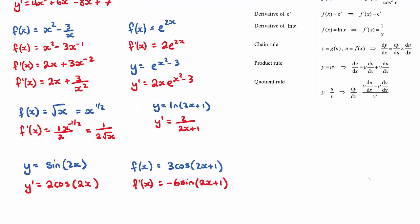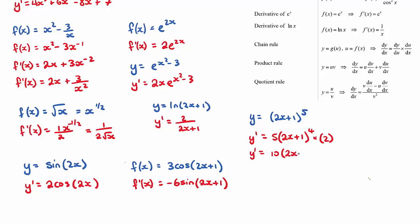We use the chain rule when we have a bracket to a power, for example y equals (2x plus 1) to the power of 5. Bring the power down: 5, bracket stays the same, reduce the power by 1 to get 4, then multiply by the derivative of what's inside the bracket. The derivative of 2x plus 1 is 2, so y dash equals 10(2x plus 1) to the power of 4.